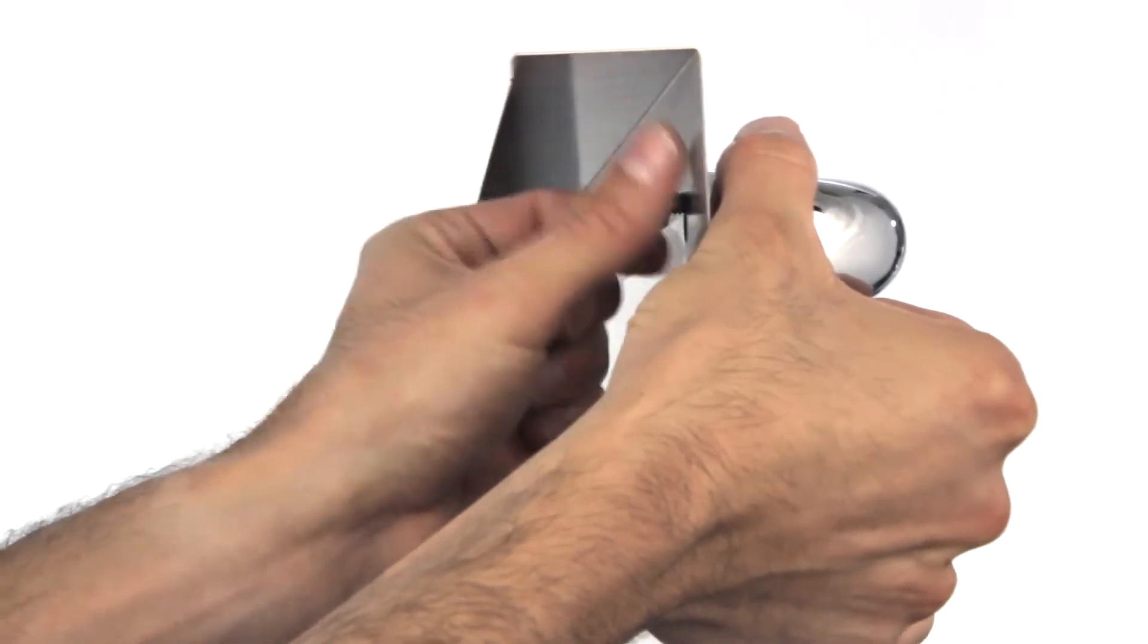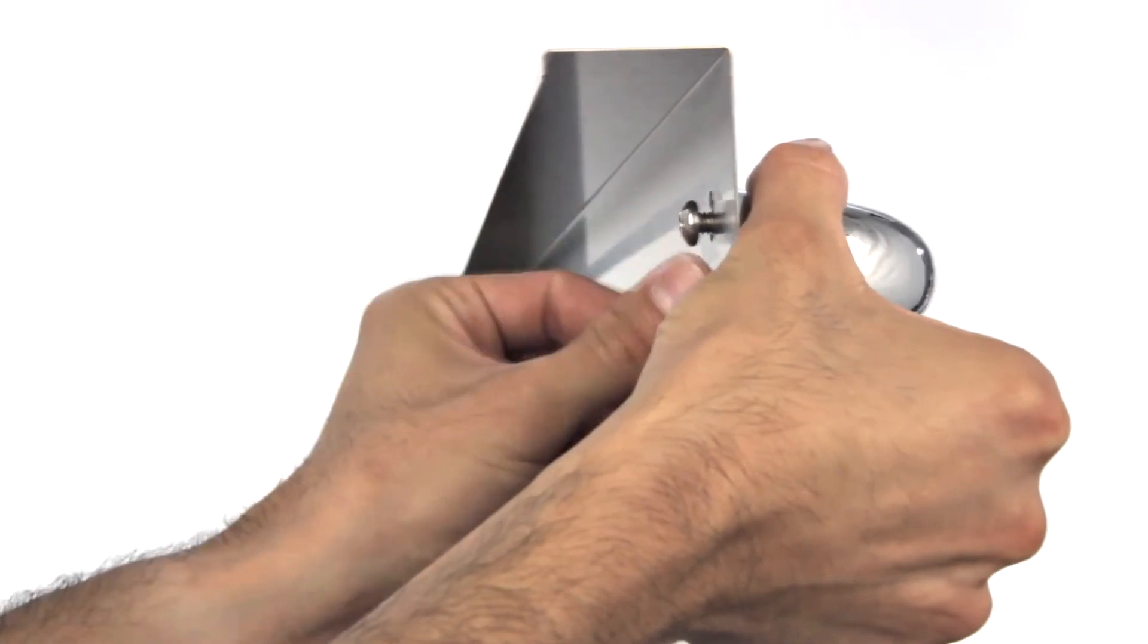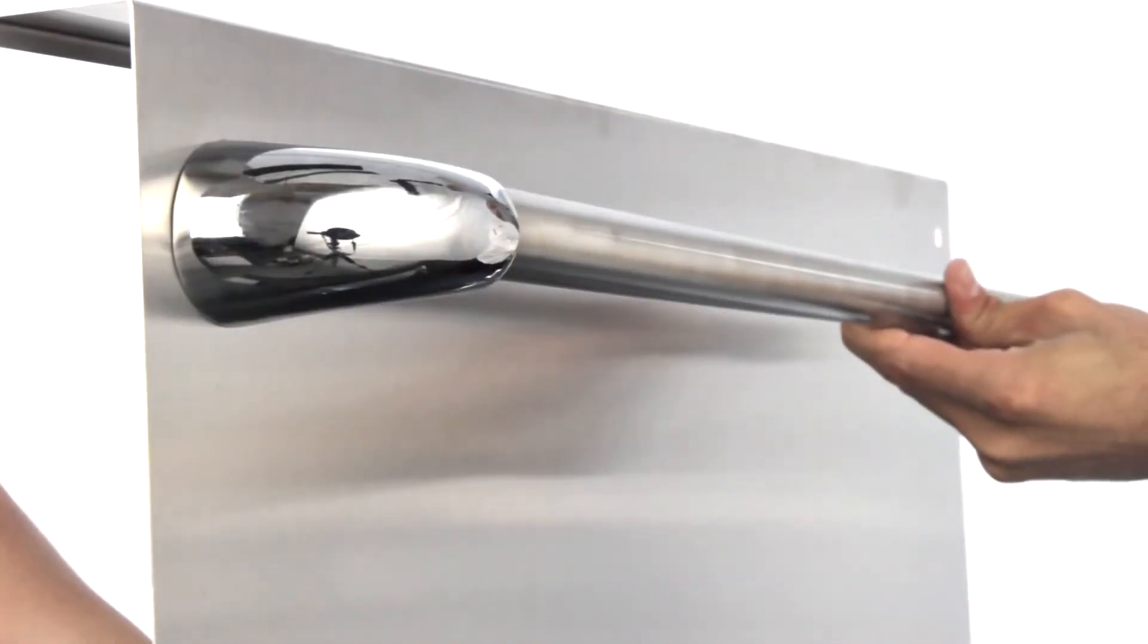Now place the bottom handle bracket flush with its two mounting holes, and hand tighten the two screws, leaving a little play in both until the handle has been installed.